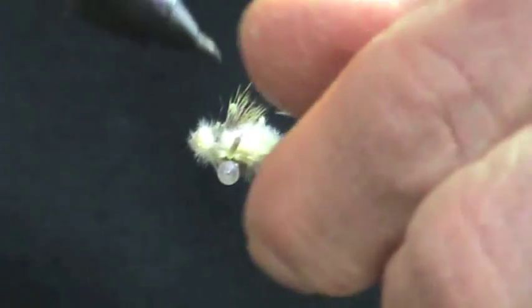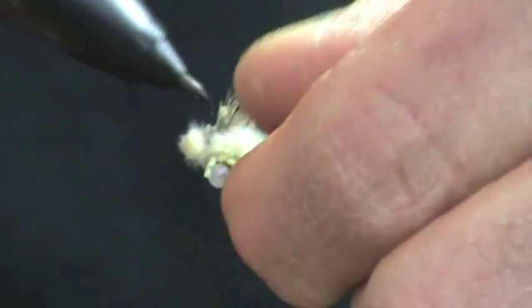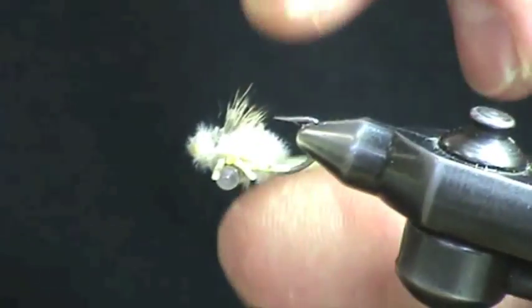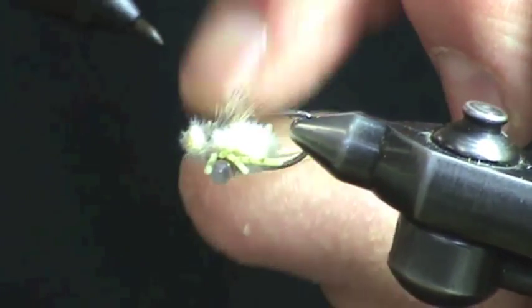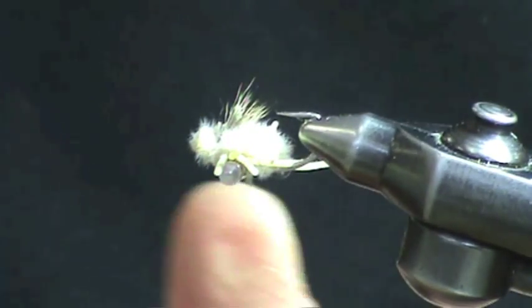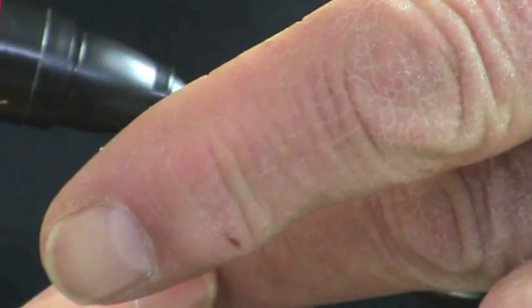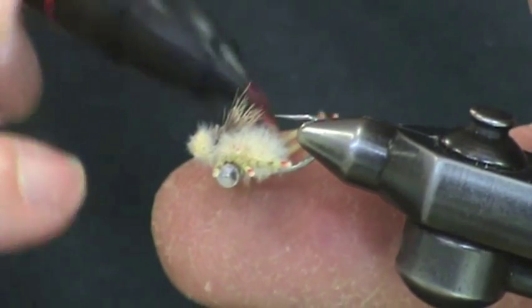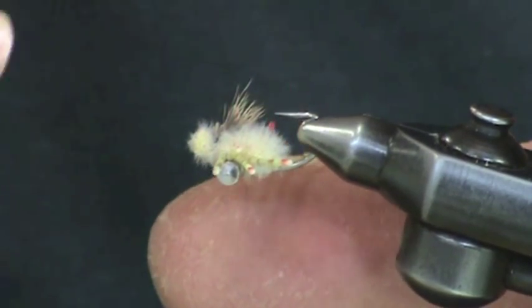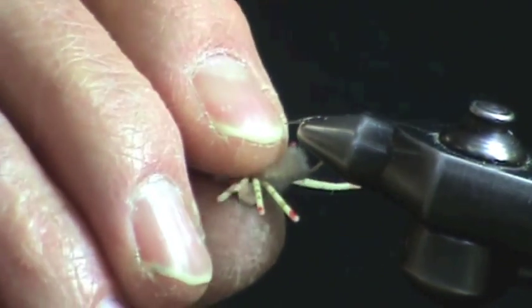Now what I do is I'll go forward with permanent marker and mottle the legs. You'll never see a crab really with one color leg. They usually have two or three different mottling colors on their legs, so I'll mottle this one brown with red tips. This imitates the fleeing crab. There's several different crab species.